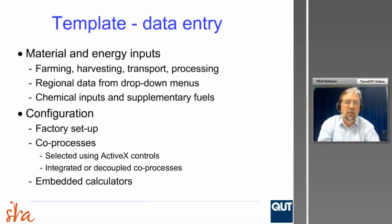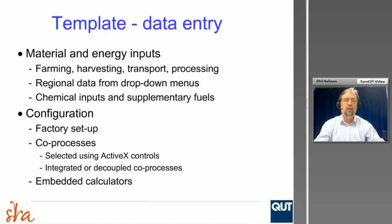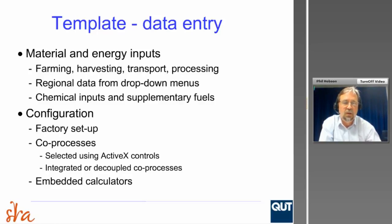In terms of data entry, the system handles material and energy inputs — farming, harvesting, all the way back through the whole production process. It provides regional data from drop-down menus, because a lot of this data is not very easy to get hold of. It allows you to input all the chemical inputs, supplementary fuels, coals, the amount of trash and gas brought in from other regions. Configuration describes the process you're using to produce the product — whether sugar, ethanol or power — and the particular factory setup, allowing you to readily customize your spreadsheet.